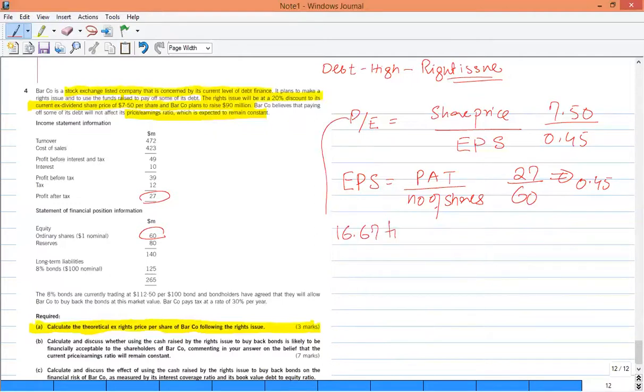Now they are saying that if it is right issue or debt, the P/E is same as 16.67 times. How much loan is for the company? 125. The 8% bonds. The company's 8% bond is traded at 112.5 and the bondholders have agreed that they will allow the company to buy back the bond. Tax rate is 30%.